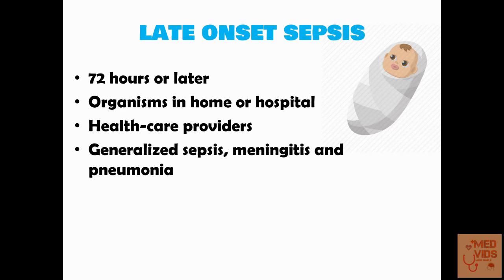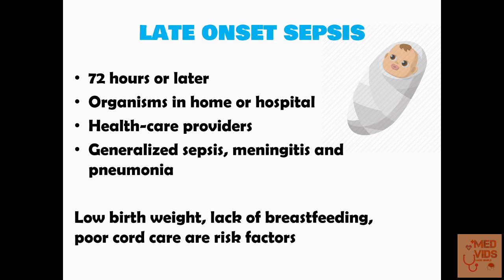Late onset sepsis can manifest either as generalized sepsis or along with it there can be meningitis and pneumonia. Early onset sepsis usually presents as pneumonia, but it can also less commonly manifest as generalized sepsis and meningitis. The risk factors for late onset sepsis are low birth weight, lack of breastfeeding for the neonate and poor cord care.